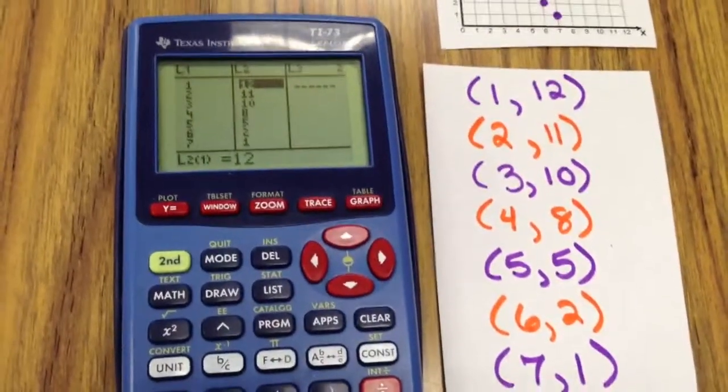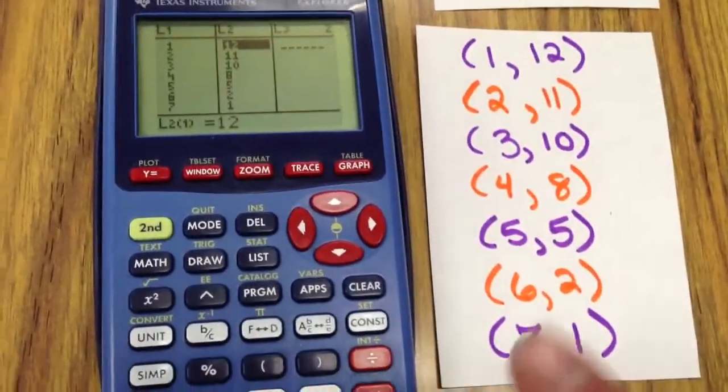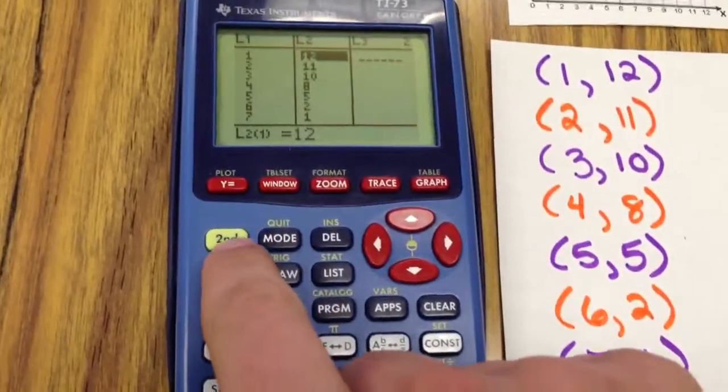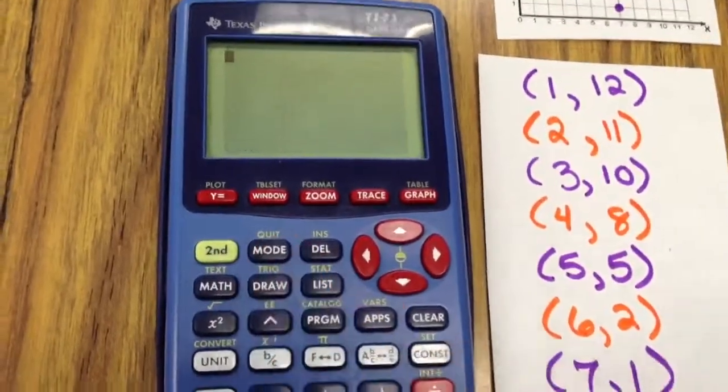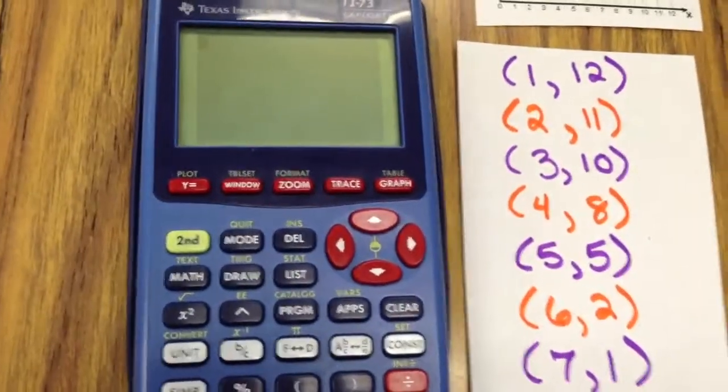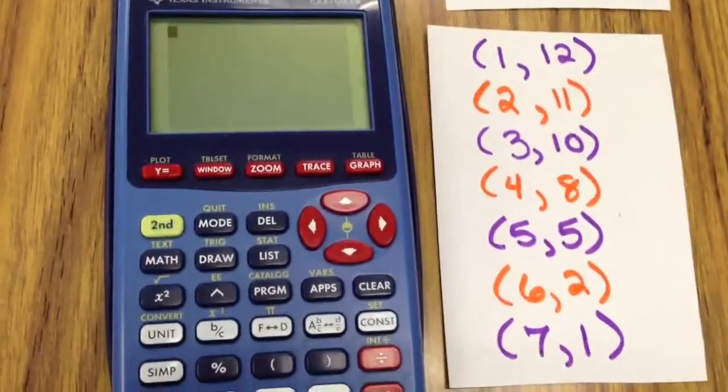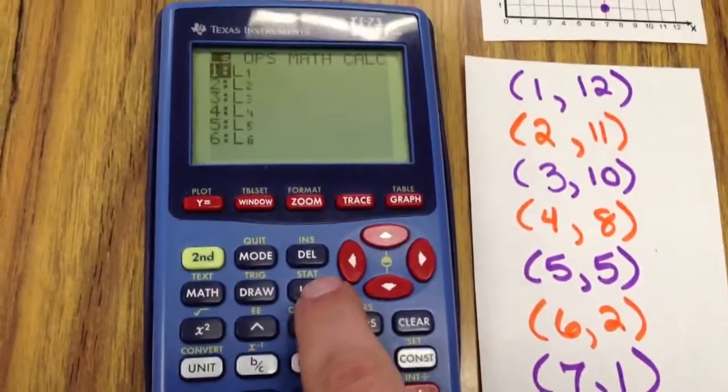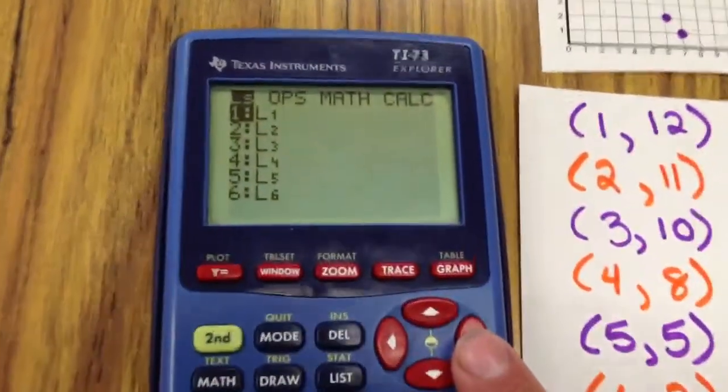Now I need to make my line of best fit. Pay close attention. What I have to do is I have to quit by going to second mode. Last thing I need to do is I need to go to second, list, and that takes me to several options.